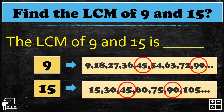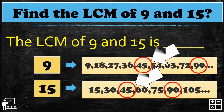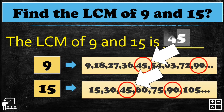Step 3: find the LCM of 9 and 15. The LCM is 45, because 45 is the least or smallest among all the common multiples. So 45 is the LCM of 9 and 15.